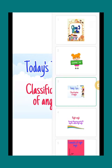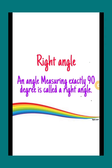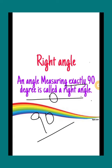Let's start with the first, that is right angle. An angle measuring exactly 90 degree is called a right angle. This angle we can write 90 degree like this also. This is the sign of degree.